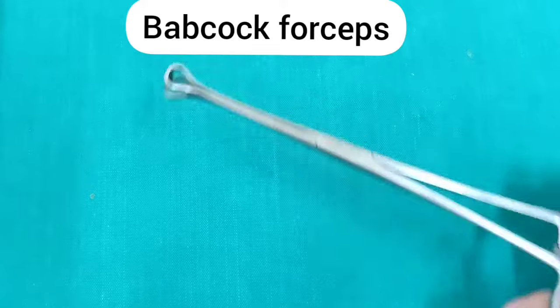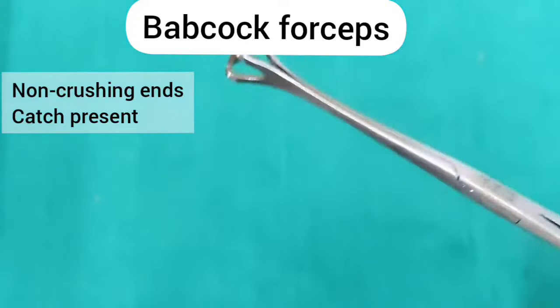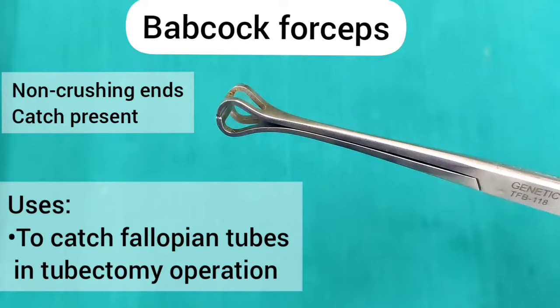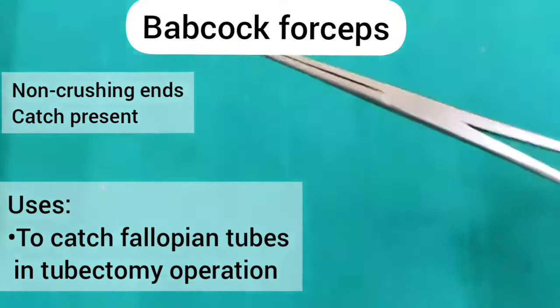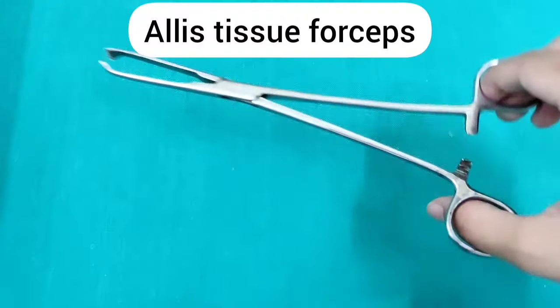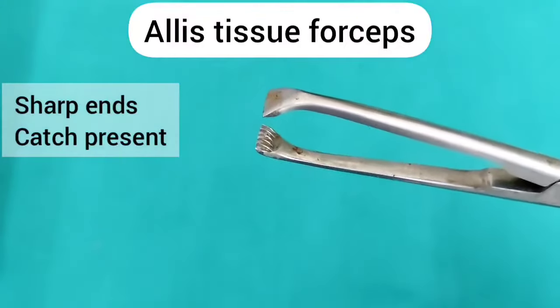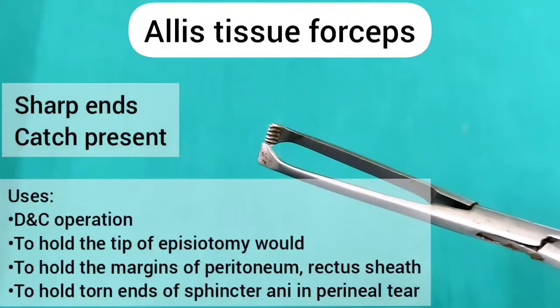Babcock forceps. It has non-crushing ends and a catch is present. It is used to catch the fallopian tubes in tubectomy operation. Allis tissue forceps — you can see the catch and the ends are sharp. It is used in D&C operation, to hold the tip of an episiotomy wound, to hold the margins of the peritoneum and rectus sheath, and to hold the torn ends of the sphincter ani in case of a perineal tear.